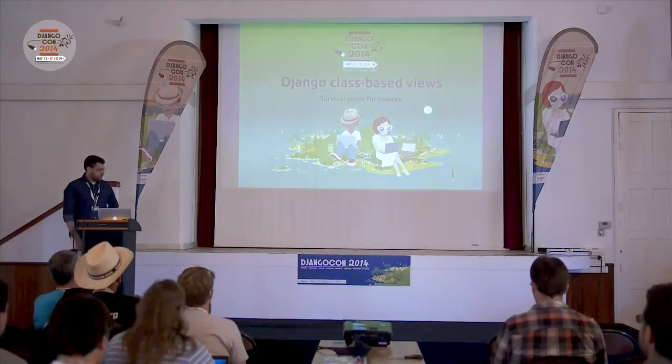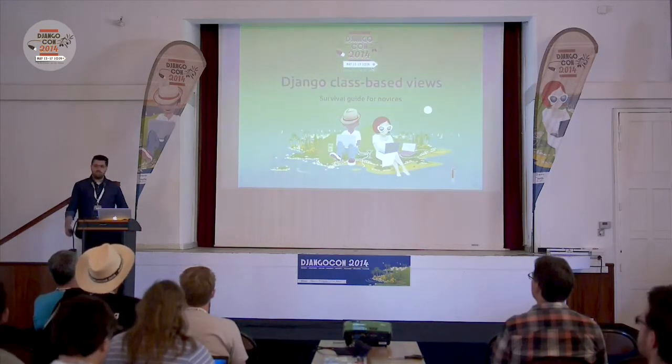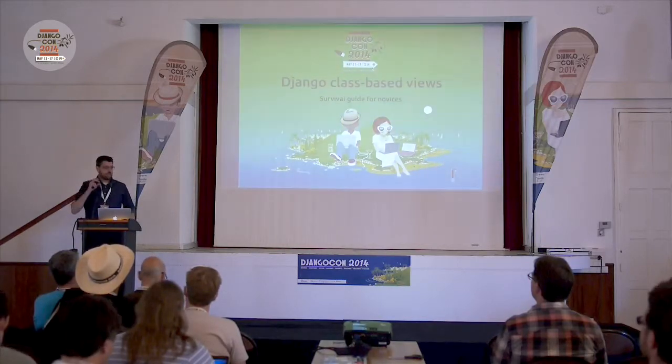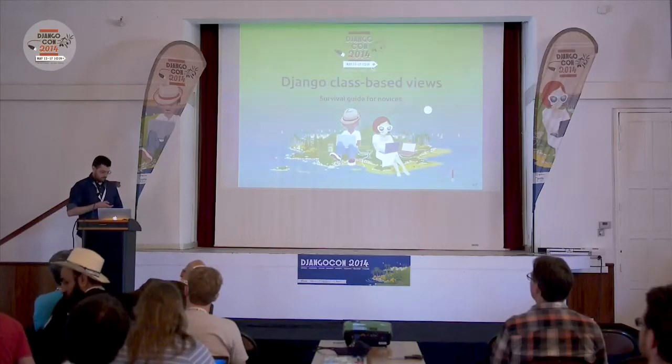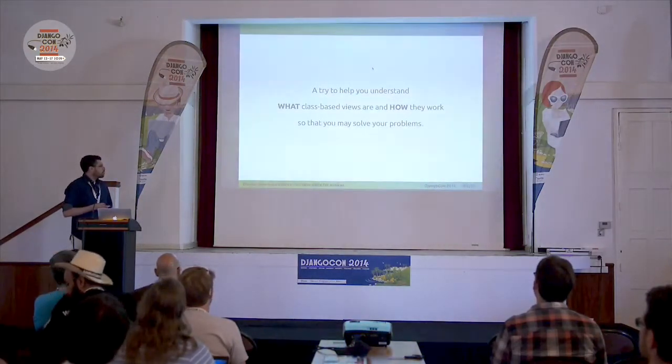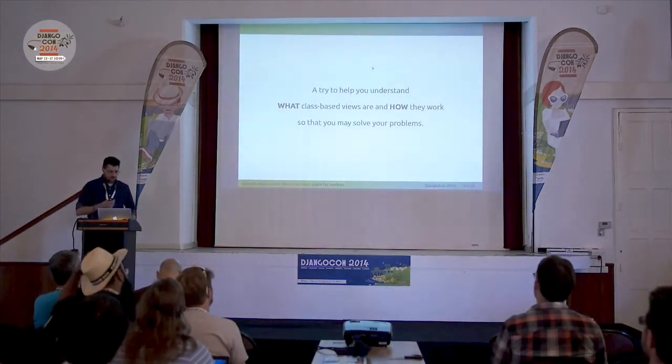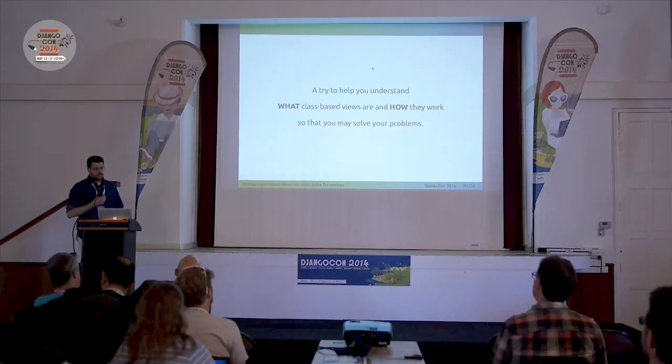If you look around the internet, it's full of tutorials and Stack Overflow answers that try to help you use Django class-based views to solve very specific problems — for example, adding some data to context or changing the template name. Today I'd like to try something different: I'd like to help you understand what class-based views are and exactly how they work, so that later you might solve your own problems.